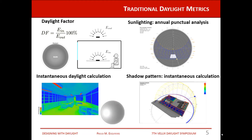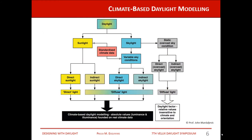The most realistic option, for just one moment in time, is the instantaneous daylight calculation — it provides the whole spatial performance, but only for one moment in time. It is only by moving to climate-based daylight modeling that we get an instantaneous calculation considering both the sun and the sky, based on real climate data, yielding illuminances for all sensor points on the work plane.